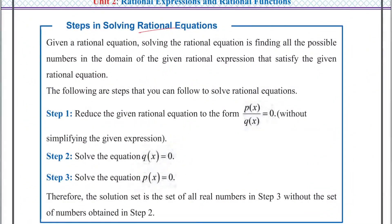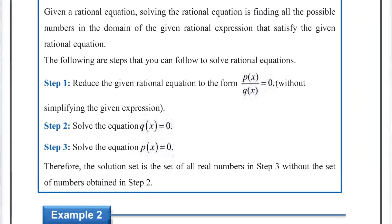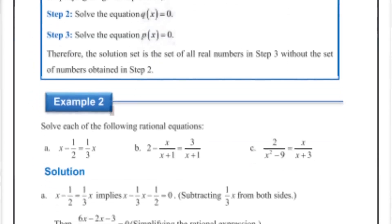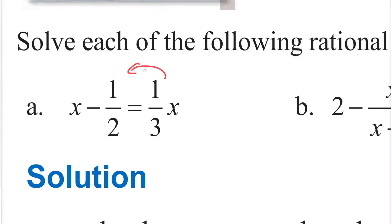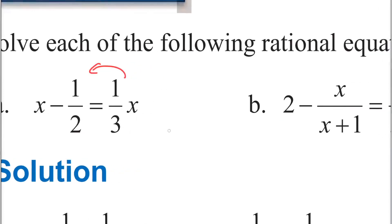Steps in solving rational equations. Example: x minus 1 over 2 minus x minus 1 over 3x equal to zero.